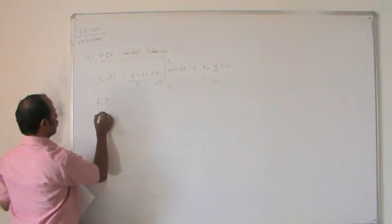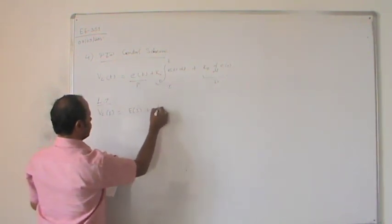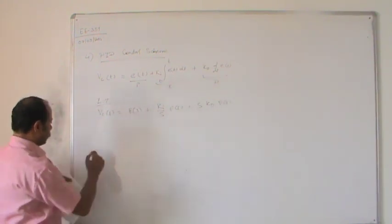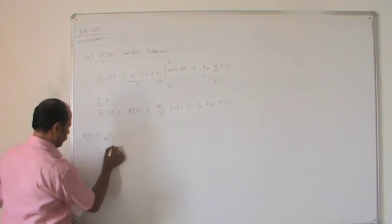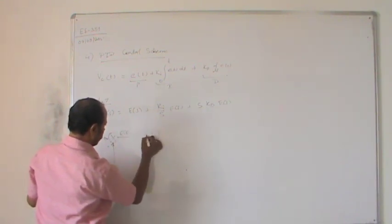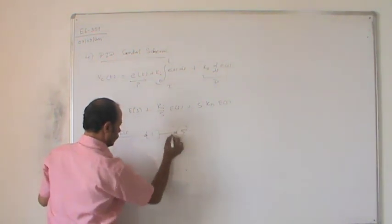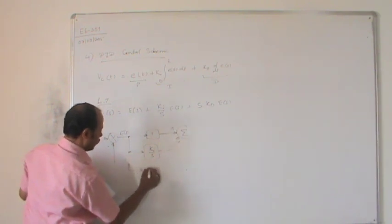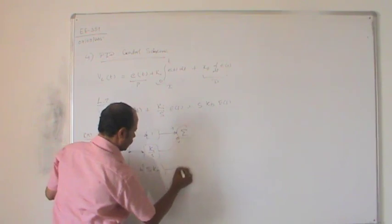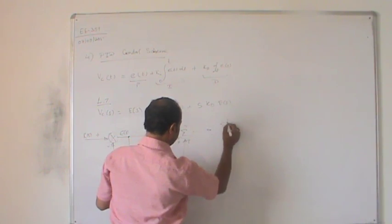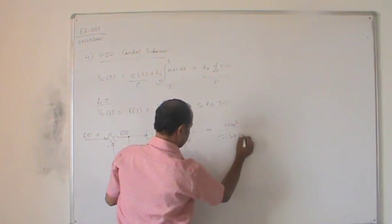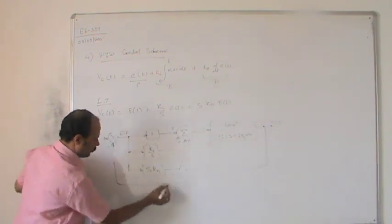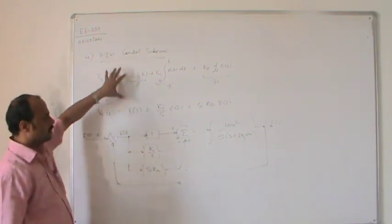Taking the Laplace transform: Vc(s) = E(s) + (ki/s)·E(s) + s·kd·E(s). Drawing the block diagram: we have E(s) with three parallel paths — a proportional block of unity 1, an integral block ki/s, and a derivative block s·kd — all summed together. The sum feeds into the plant ωn²/[s(s + 2ζωn)], giving output C(s) with unity feedback. This is the PID control scheme.